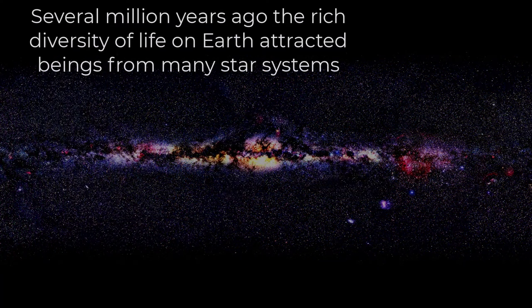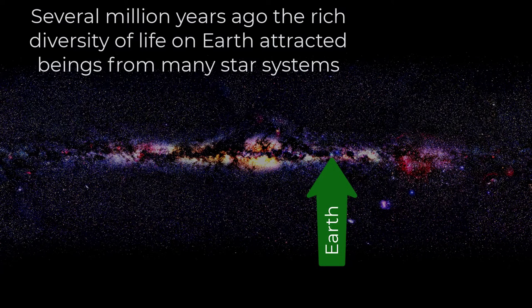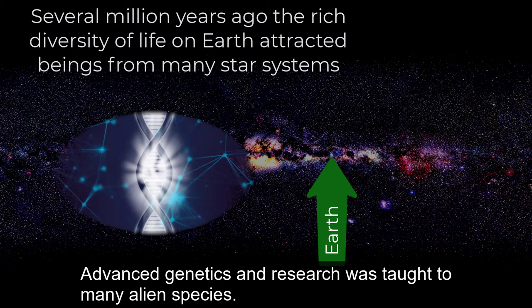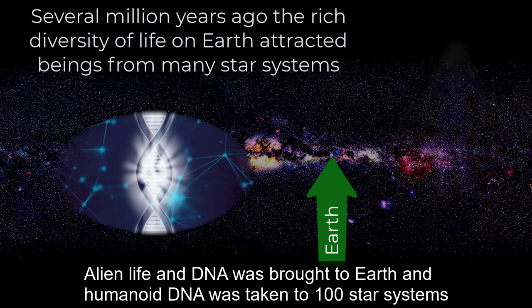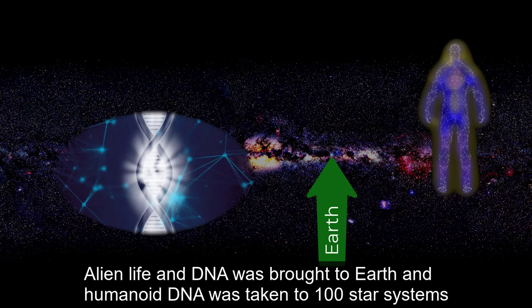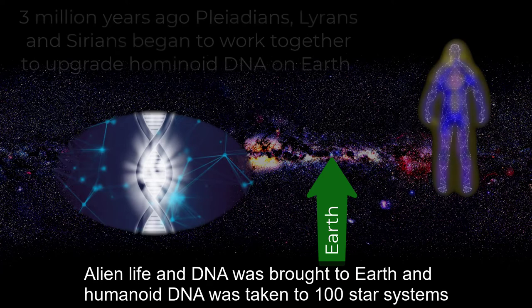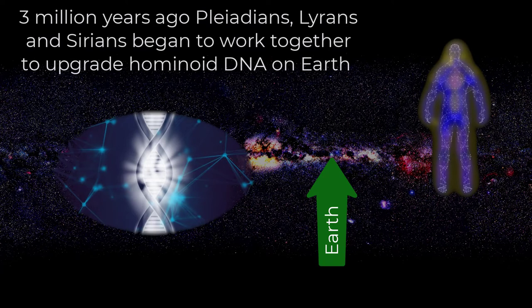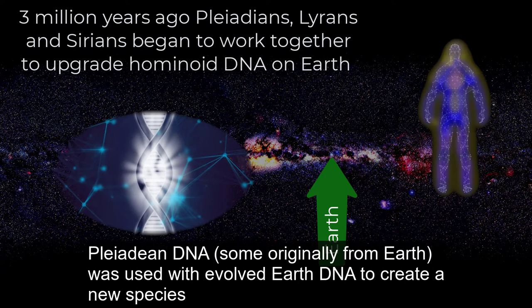Several million years ago, the rich diversity of life on Earth attracted beings from many star systems. Advanced genetics and research was taught to many alien species. Alien life and DNA was brought to Earth, and humanoid DNA was taken to 100 star systems. Three million years ago, Pleiadians, Lyrans and Sirians began to work together to upgrade hominoid DNA on Earth. Pleiadian DNA, some originally from Earth, was used with evolved Earth DNA to create a new species.